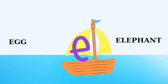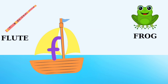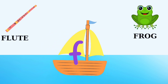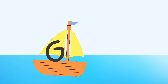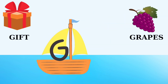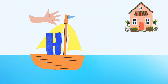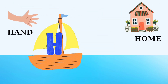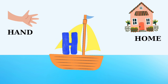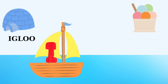F is for flute, F is for frog. G is for gift, G is for grapes. H is for hand, H is for home. I is for igloo.